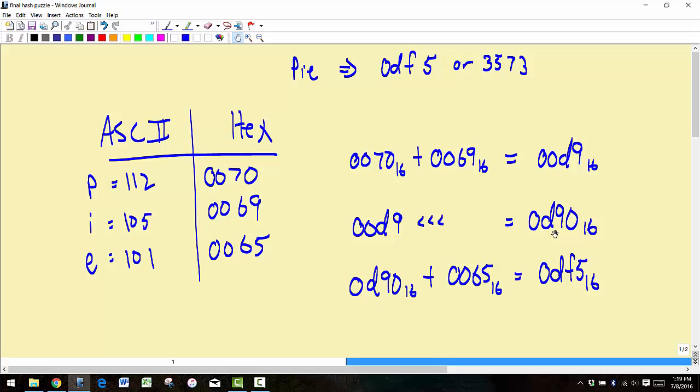Once we got this value then we just added the value of E on, which was 0065. So you add these two together and you get this result here. This is our hash value or digest.